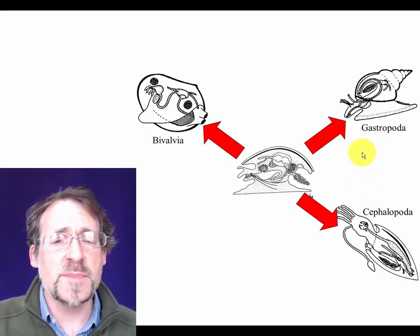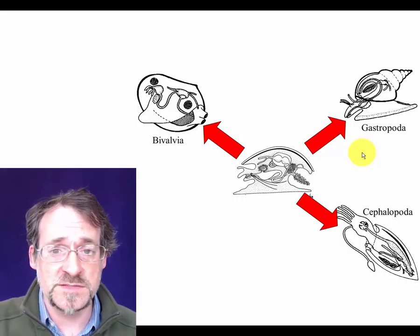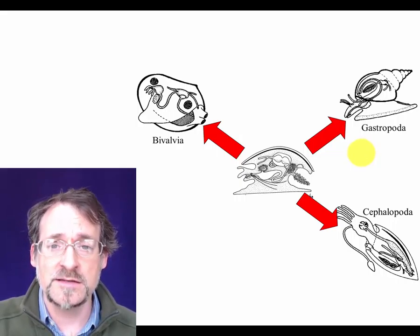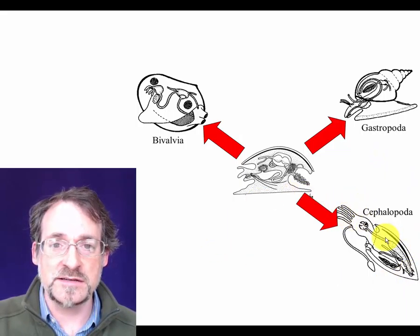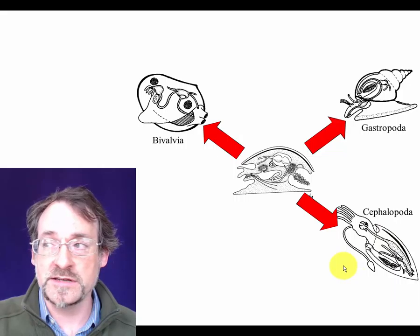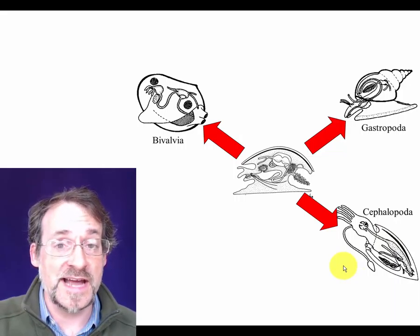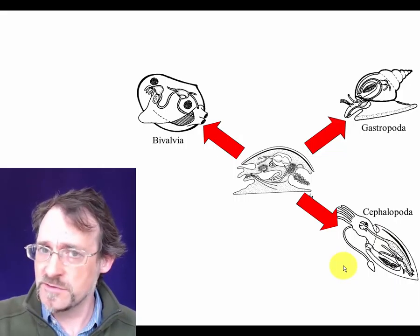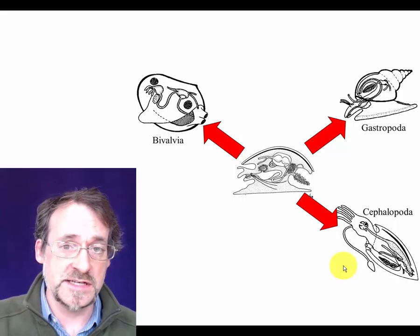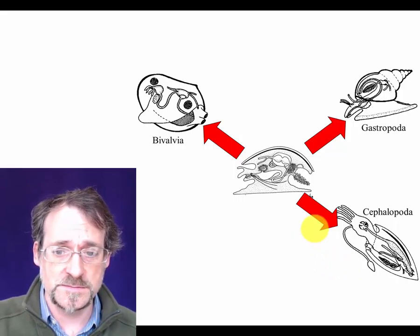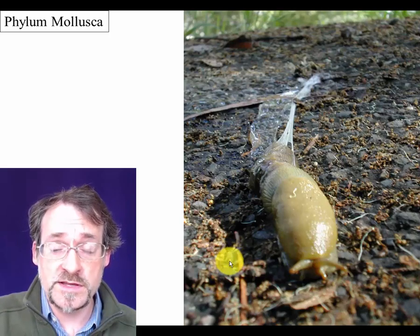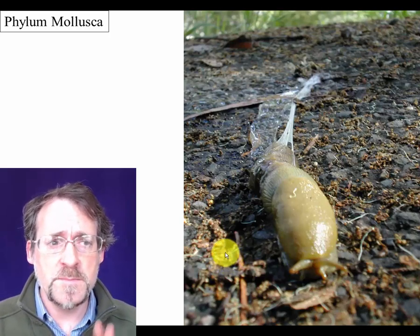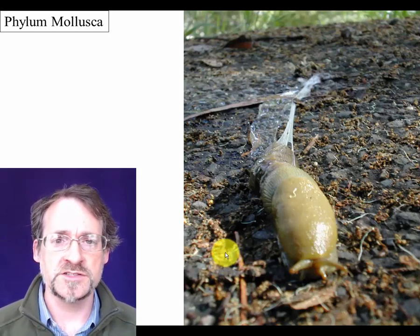In the cephalopods, the ancestral form has been perhaps most radically modified. You have tentacles at one end, usually a shell that is reduced or completely absent, and an extremely different lifestyle than you see in any of the other mollusks. While you don't need to know the names of these different groups, it might be helpful to jot them down if it helps you remember which organisms are which.